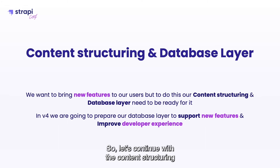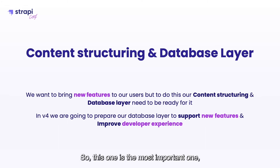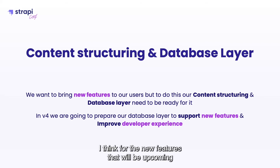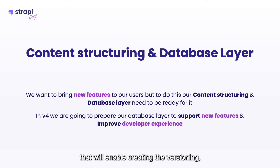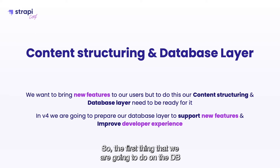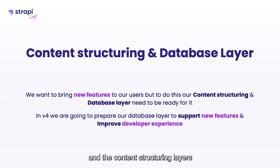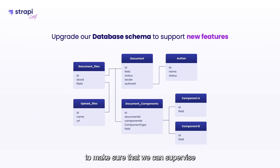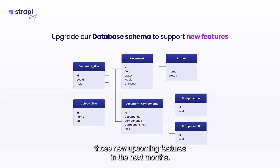Let's continue with the content structuring and database layer. This one is the most important for the new features coming in the next few months, because it's the one that will enable creating the versioning, collaboration, and publication workflows, which are really important to us. The first thing we're going to do is rework the way we do our database schema to make sure we can support those new upcoming features.